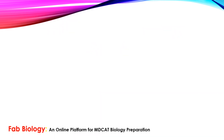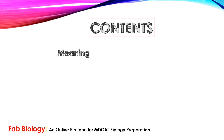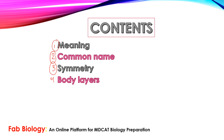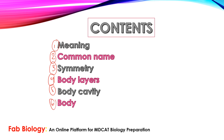In today's topic we will cover the following contents. First, the meaning of the phylum. Then common names. Then symmetry — are they asymmetrical? Then body layers — either diploblastic or triploblastic. Then body cavity — is there one or not? Then whether the body is segmented or unsegmented. The last one is their mode of life — either terrestrial, aquatic, freshwater, or marine. We will study these seven points.